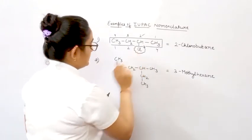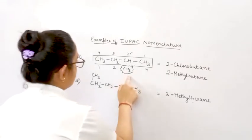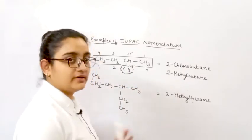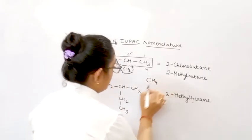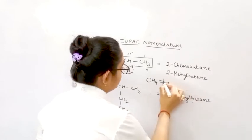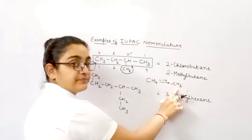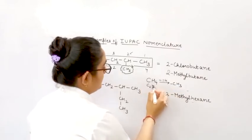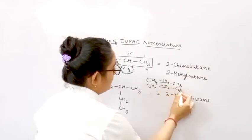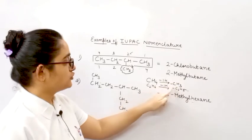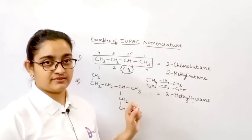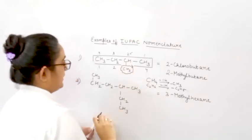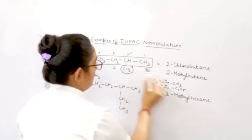Now, if instead of chlorine, it would have been a methyl group — let me explain. You know that this is methane. If I remove one hydrogen, it is called methyl. This is ethane; if I remove one hydrogen, it becomes ethyl. These are also called alkyl groups and they are also used as prefix. So over here in this example, instead of chlorine, it's a methyl group — so the name becomes 2-methylbutane.